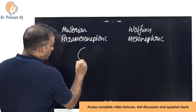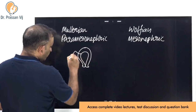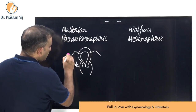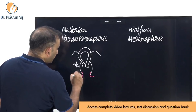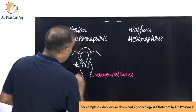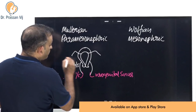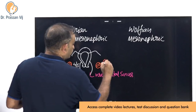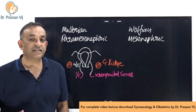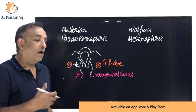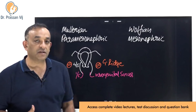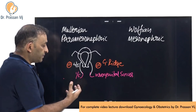The Müllerian duct makes the uterus, cervix, fallopian tubes, and most of the vagina — four-fifths of it. The lower one-fifth of the vagina is made by the urogenital sinus, and the ovaries are made by the genital ridge. The male internal genitalia — epididymis, vas deferens, seminiferous tubules, prostatic part of urethra — is all made by the Wolffian or mesonephric duct.